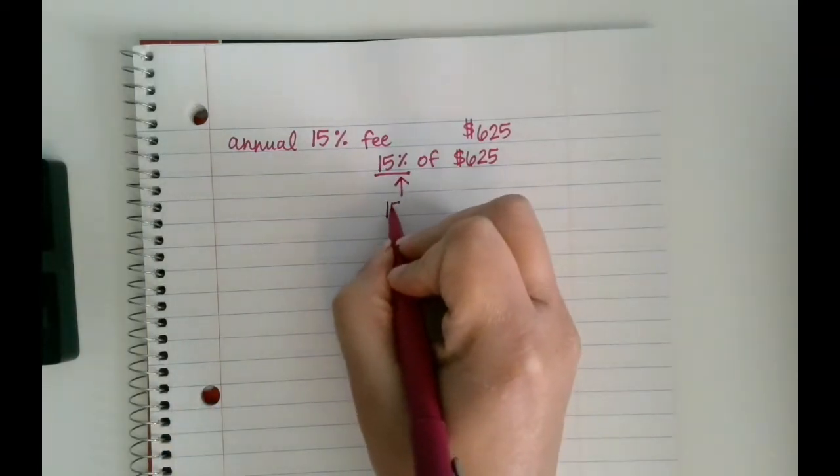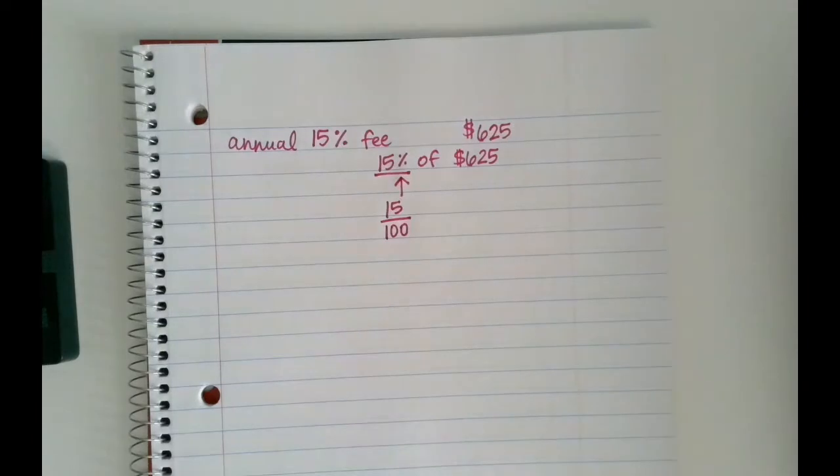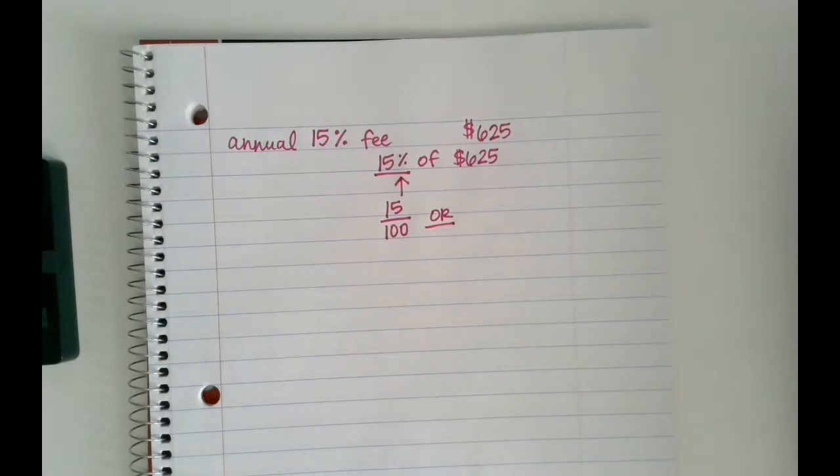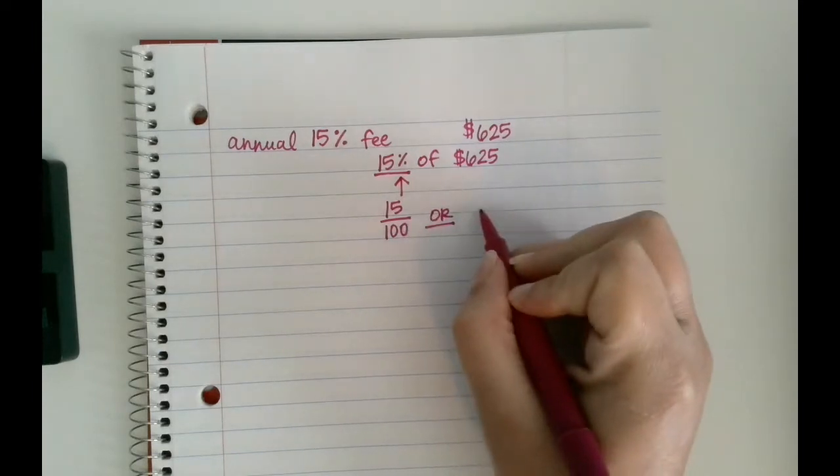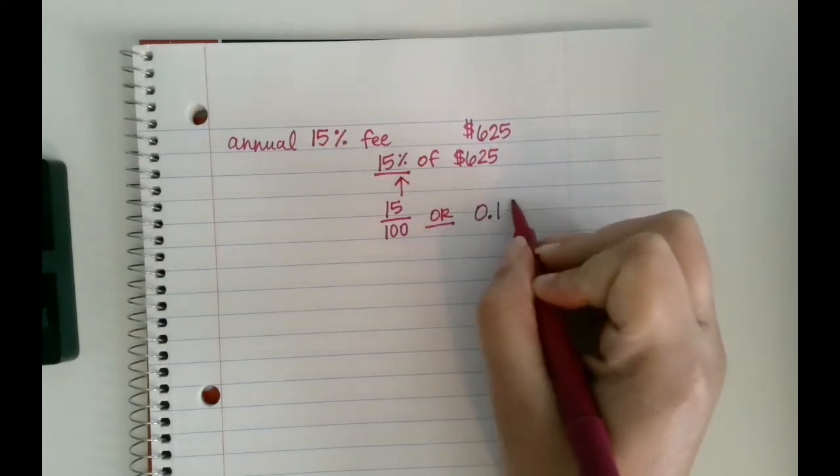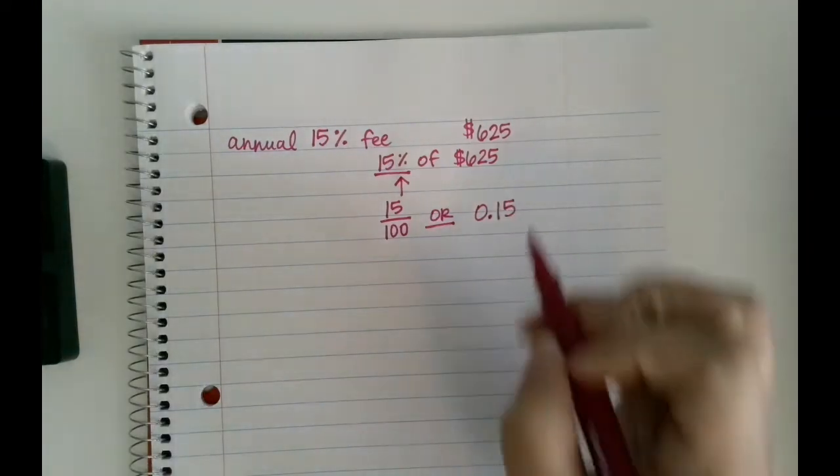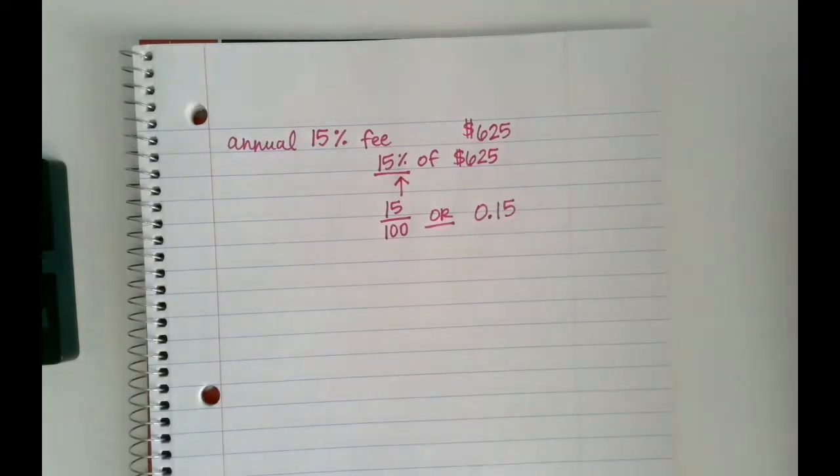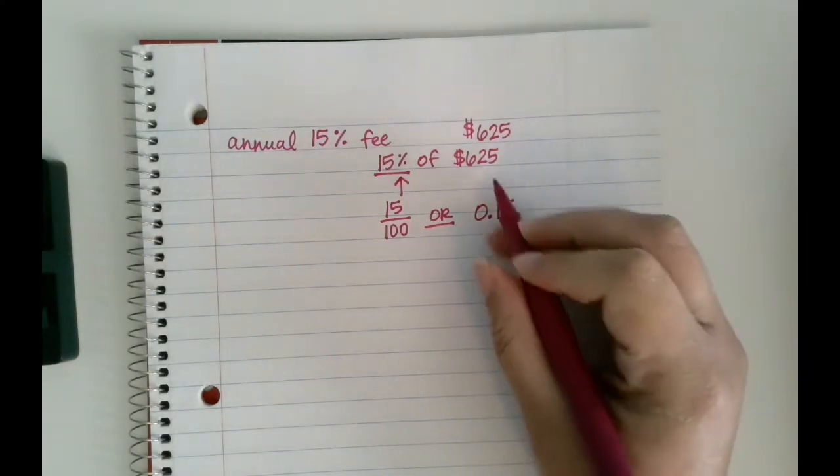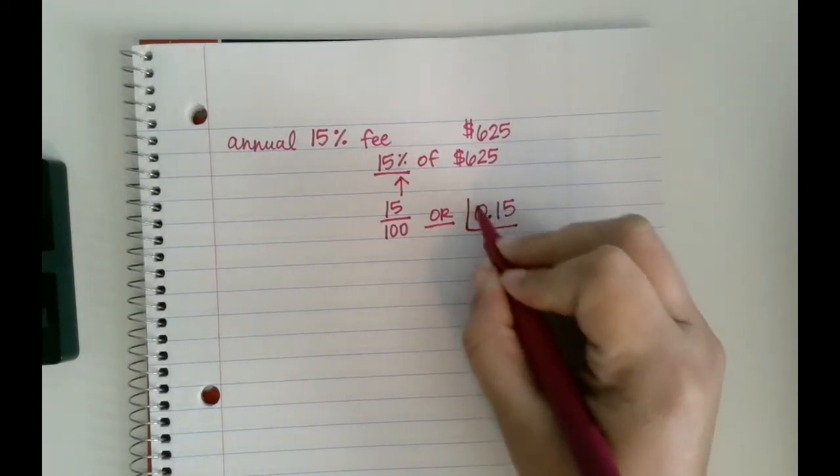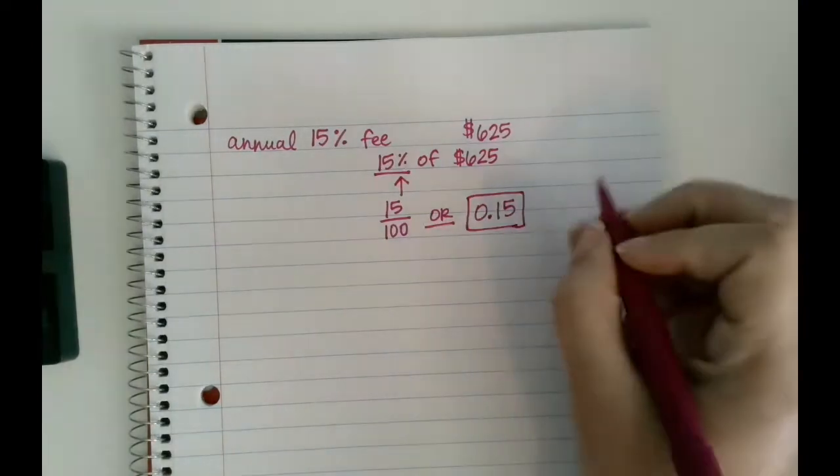We need to remember that 15 percent can also be written like a fraction - that could be 15 out of 100 - or it could also be written like a decimal. So that's where we go back to that very first unit when we are turning fractions to percent to decimals. So 15 over 100, fifteen hundredths, would look like 0.15 - remember it goes tenths, hundredths. So if I have a 15 percent fee on my checking account, then I want to find 15 percent of $625. The easiest thing to do is turn it into a percent and then multiply.